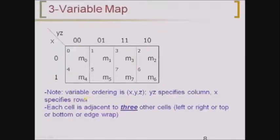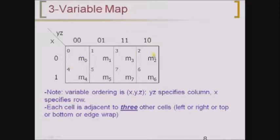The variable ordering has Y,Z specifying the columns and X specifying the rows. Each cell is adjacent to three other cells. For example, M0 is adjacent to M1, M4, and M2. M0 is adjacent to M2 because if you consider M0 (x-bar·y-bar·z-bar) and M2 (x-bar·y·z-bar), only one literal changes — that is y — so those two cells are adjacent cells.